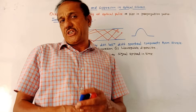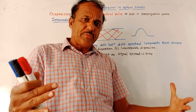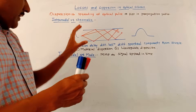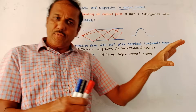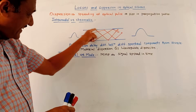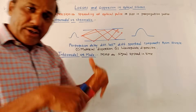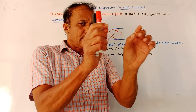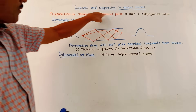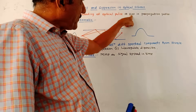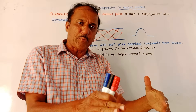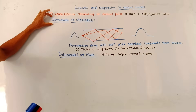An important topic is dispersion. In simplified terms, dispersion is the spreading of the output pulse. As shown in the diagram of a multimode fiber optic cable, different modes and wavelengths travel through the cable simultaneously, each following different paths. Since they do not all reach the output at the same time, the pulse at the output is broader. This spreading of the output pulse is referred to as dispersion, caused by differences in propagation paths.